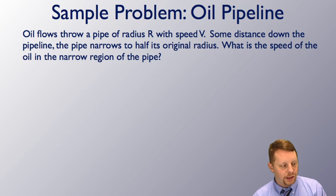Let's take a look at an oil pipeline problem. Oil flows through a pipe of radius R with speed V. Some distance down the pipeline, the pipe narrows to half its original radius. What is the speed of the oil in the narrow region of the pipe?